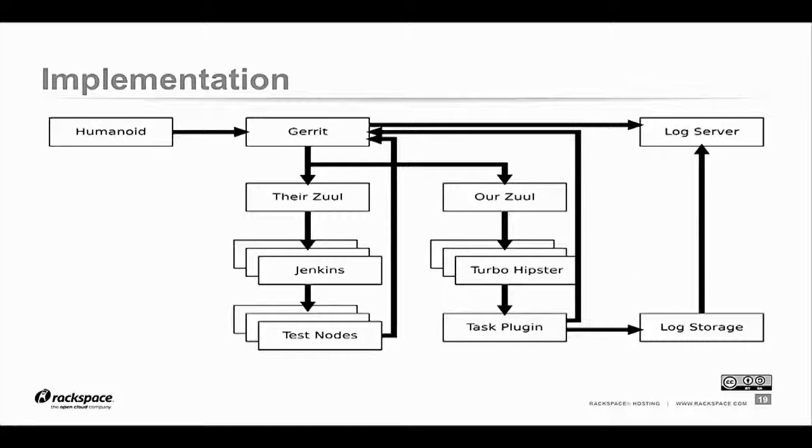We run this system as a third-party test. We have our own Zuul that subscribes to the same feed of events from Gerrit. Our Zuul will notice when a patch is uploaded and say it needs somebody to run the database migrations against 100 users, or 100,000 users, and so on. Then TurboHipster, which is a job runner we've developed, will say it knows how to test database migrations with 100 or 100,000 users. Zuul hands the job to TurboHipster, which runs the migrations, checks the metrics, uploads logs for extra information, and returns the result.